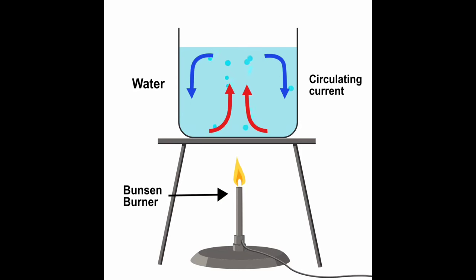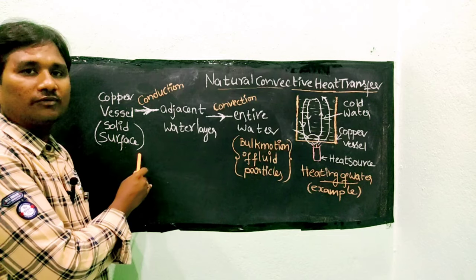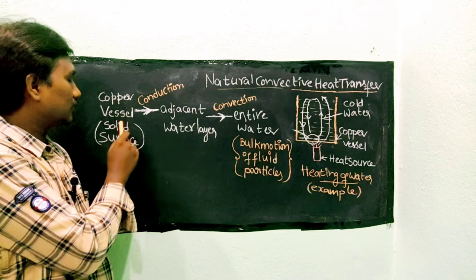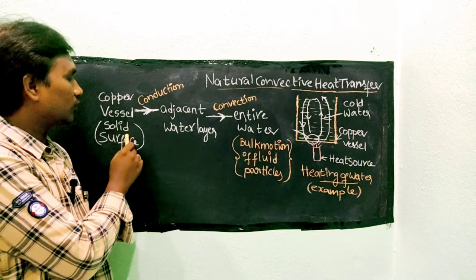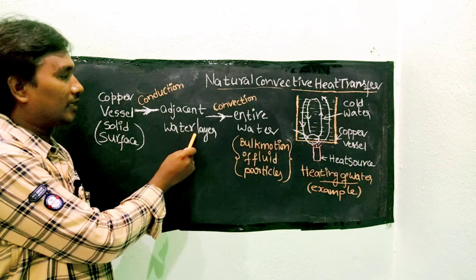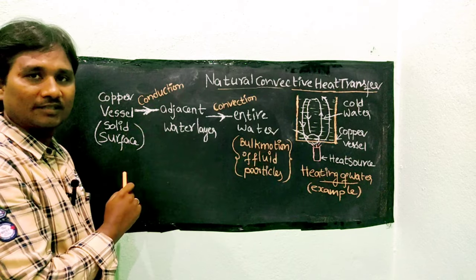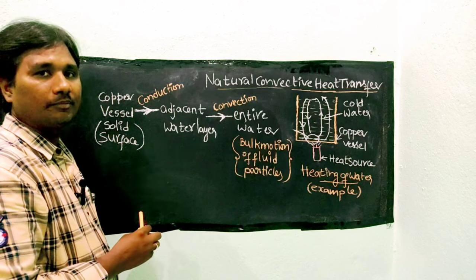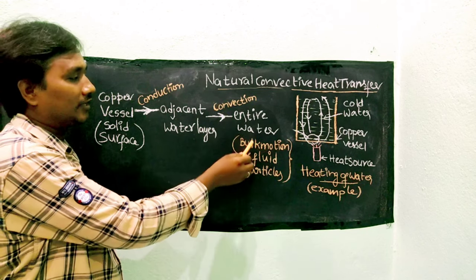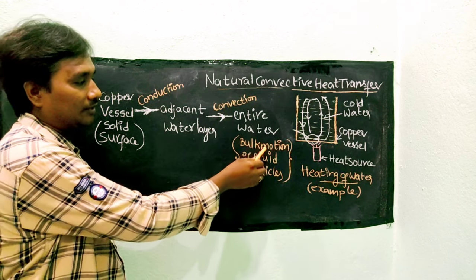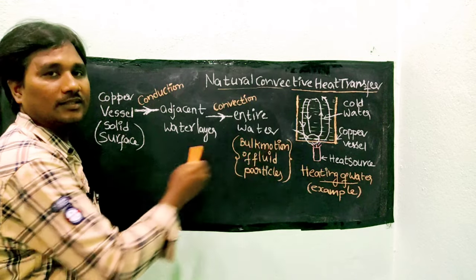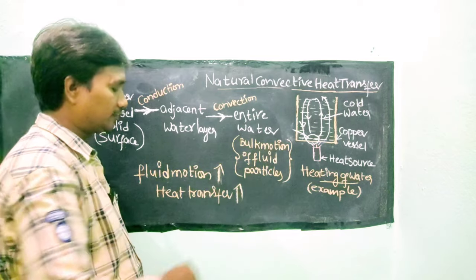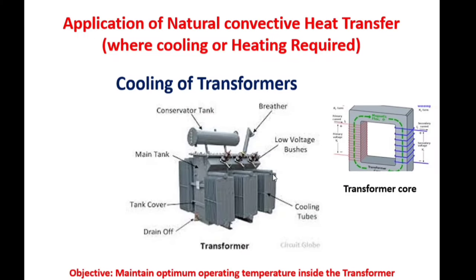Observe the graphical image of the natural circulation by convection currents. Conclusion of natural convective heat transfer: the copper vessel is a solid surface; heat is transferred from the solid surface to the adjacent water layer by means of conduction. From the adjacent water layer, the entire water is heated up by means of convective heat transfer. The mechanism of convective heat transfer is the bulk motion of fluid particles. More fluid motion means more heat transfer rate.